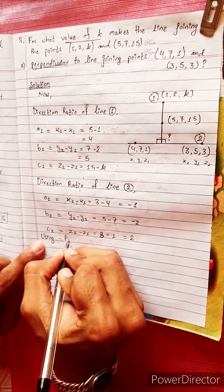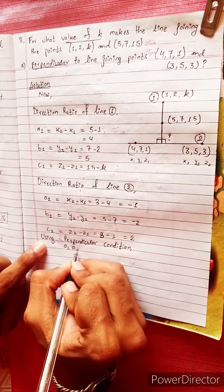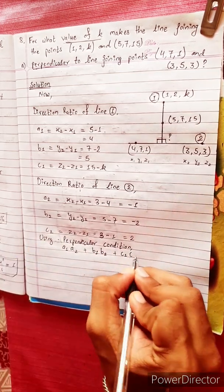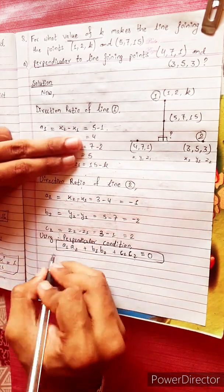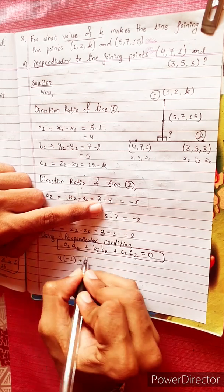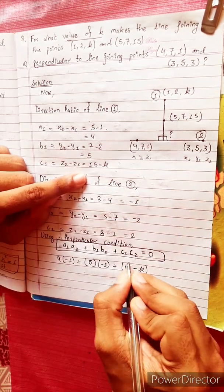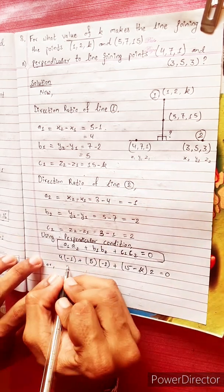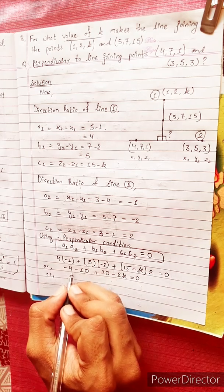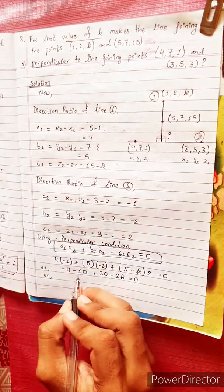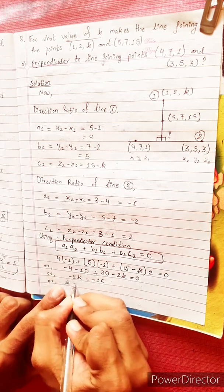Using the perpendicular condition: a1·a2 plus b1·b2 plus c1·c2 equals 0. Substituting: 4 times minus 1, plus 5 times minus 2, plus (15 minus k) times 2 equals 0. That gives minus 4 minus 10 plus 30 minus 2k equals 0, so minus 2k equals minus 16, therefore k equals 16 divided by 2, which is 8.